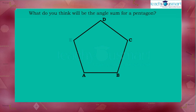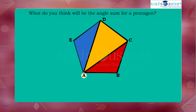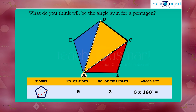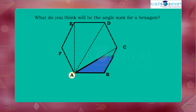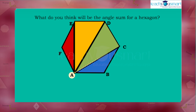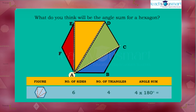In the pentagon there are five sides and it can be divided into three triangles. So the sum of the interior angles of a pentagon will be three times 180 degrees, that is 540 degrees. In a hexagon, the number of sides is six and the triangles formed are four. So the sum of the interior angles of a hexagon would be four times 180 degrees, that is 720 degrees.